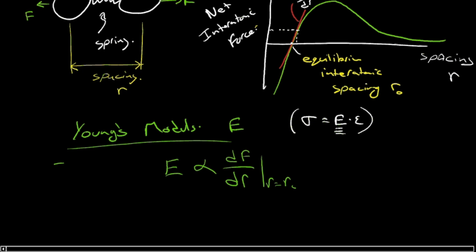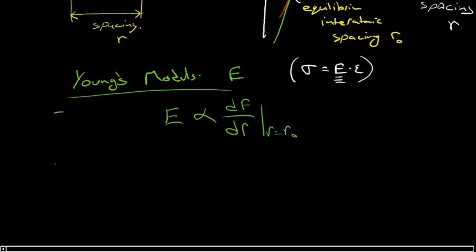And that's a nice conclusion because it tells us that it's a function only of the types of atoms, atom type, right? So as long as you don't change the type of atoms in the material, you won't change the Young's modulus.